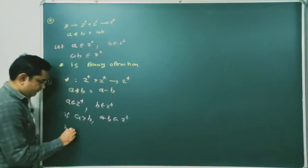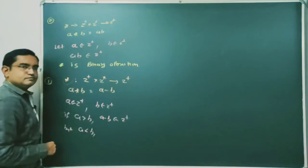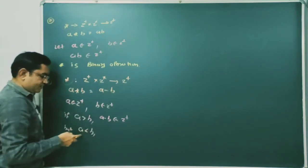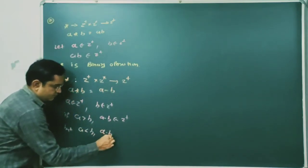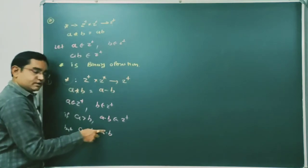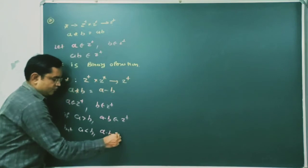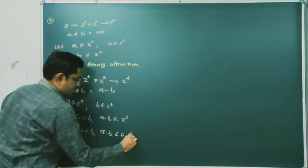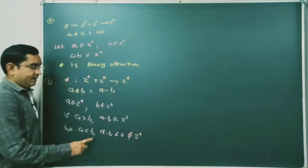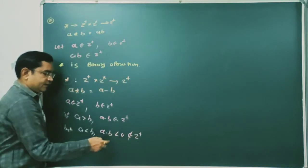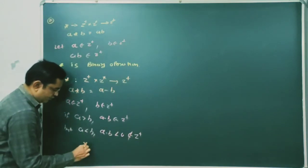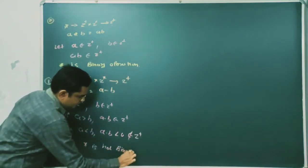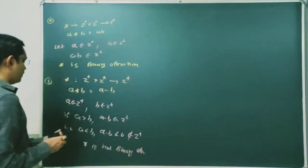But if we consider the second case, if a < b — both a and b belong to the set of positive integers, but if the value of b is greater than a — then a − b will always be less than zero, which does not belong to the set of positive integers. Hence we can say the binary operation star is not a binary operation.